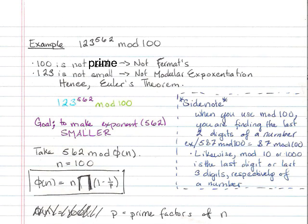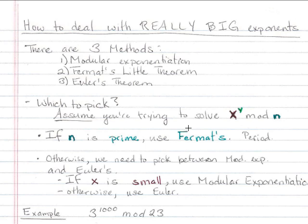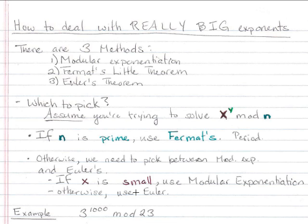To review the three, the way we picked which one to use. If n was prime, we use Fermat's. If x is small, if n is not prime, then we can't use Fermat's. Then if x is small, we use modular exponentiation. Otherwise, we want to use Euler's.